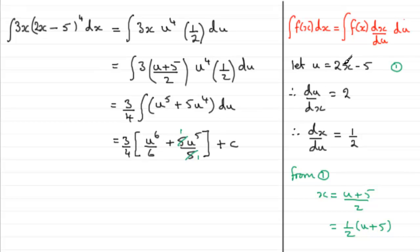Rather than just putting back that u equals 2x minus 5, it's a good idea just to work at cleaning this up at this stage. So what we've got is the 3 quarters, and then we could put this all over 6. So let's just have some square brackets here, put this all over 6. So we've got u to the power 6 plus 6u to the power 5, and then plus c.